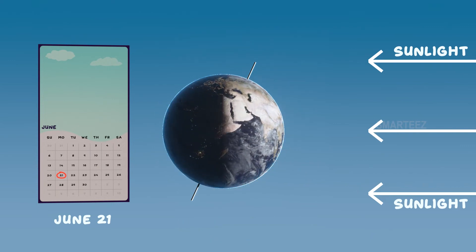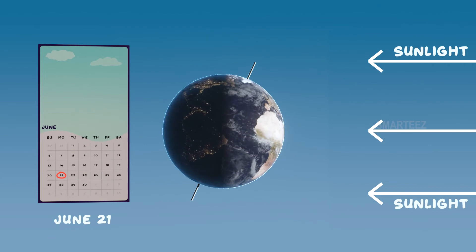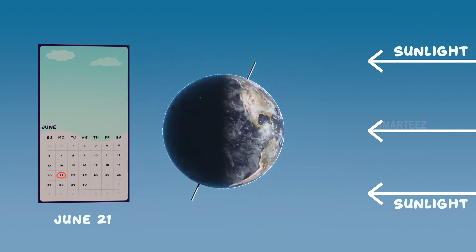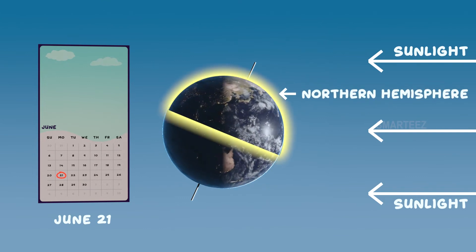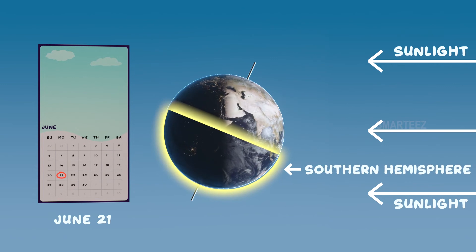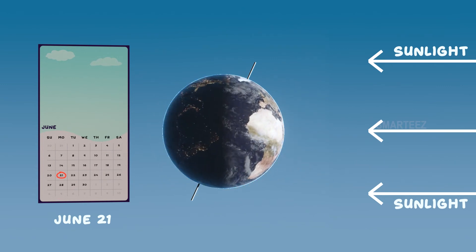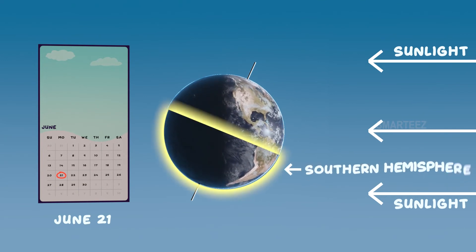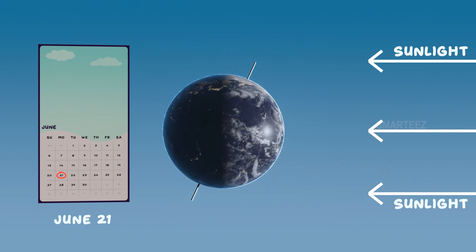I remember solstice. So the northern hemisphere has its longest day and the southern hemisphere has its shortest day. Exactly! While summer starts in the northern hemisphere, winter sets in the south. You can clearly see that the sunlight is less and at a shallow angle in the southern hemisphere.